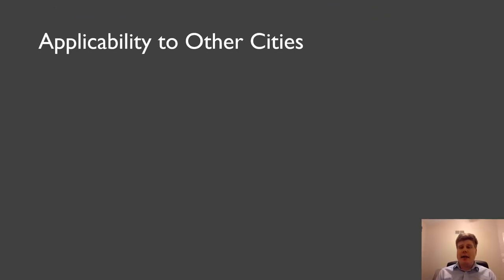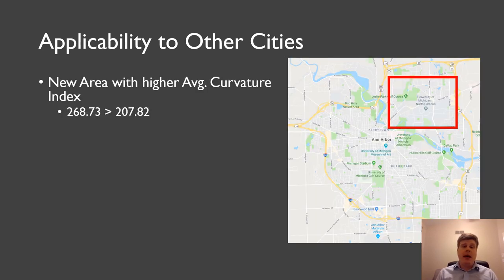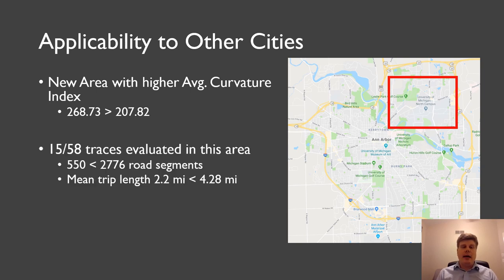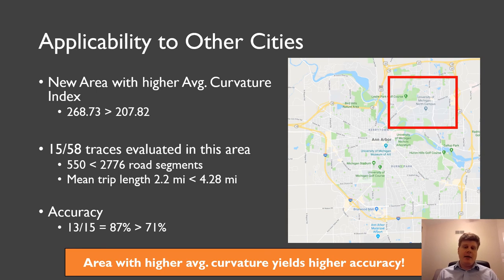We also want to quantify this and see, given on the data we had, if we could run some experiments and get some conclusions out of it. And so what we did is we defined a new area with a higher curvature, average curvature index in Ann Arbor, which you can see in the rectangular red box. And we ran 15 traces out of these 58 traces in there, because simply these 15 traces started and ended in this area. And the accuracy was surprisingly relatively high. It was in 13 out of 15 cases we could match the route completely from start to end, which is 87%. And although this is a very limited evaluation, we can say that an area with a higher average curvature can yield higher accuracy.